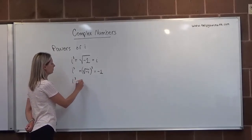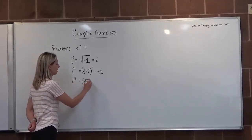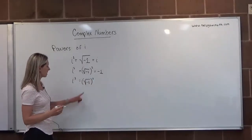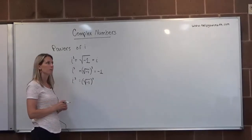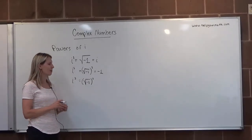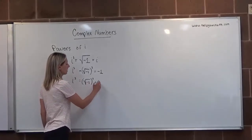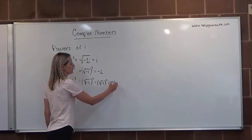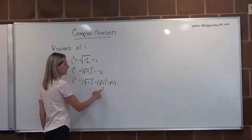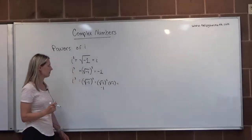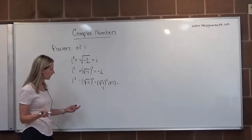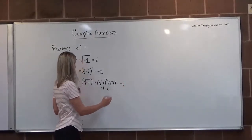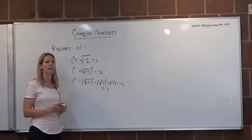Next, we have i cubed. i cubed would be like the square root of negative 1 cubed. That's not really going to do much for us. What we might do is use the multiplication property of exponents, and so we can consider this to be like the square root of negative 1 squared times the square root of negative 1. We know that this is just negative 1, so negative 1 times the square root of negative 1. This goes back to i, so this is negative 1 times i, so i cubed can be rewritten as negative i.